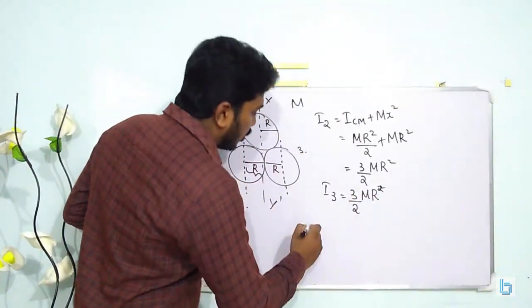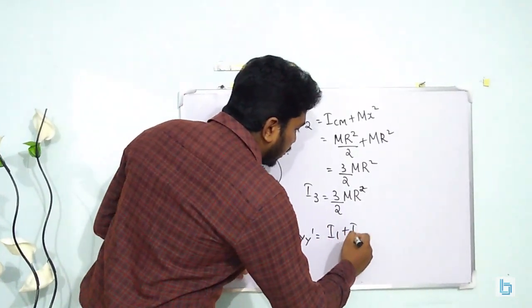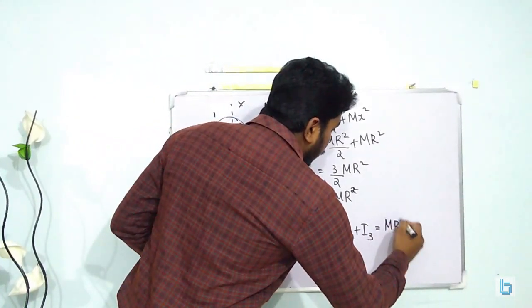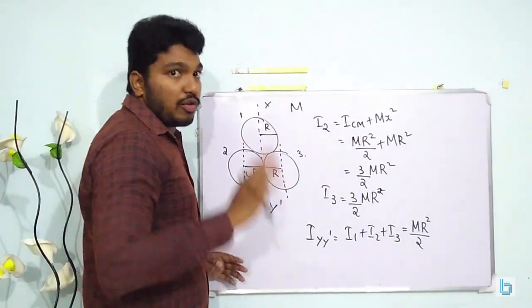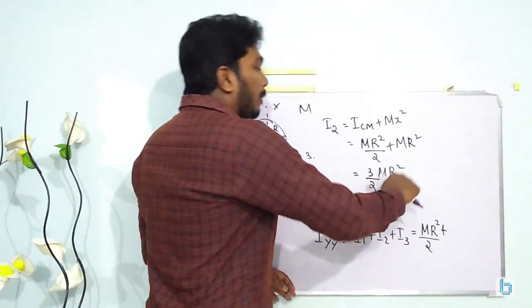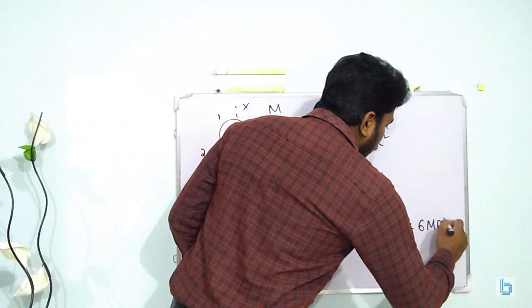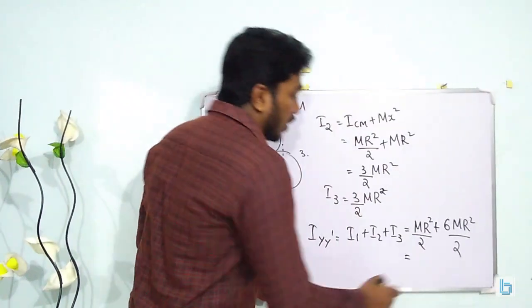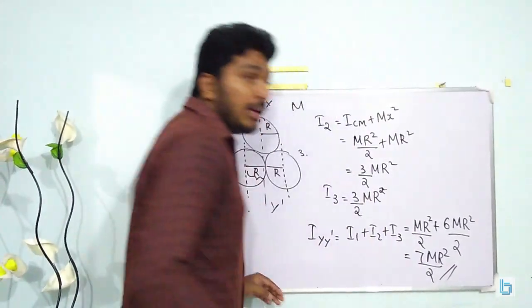So we can find out the total moment of inertia I about y y' will be equal to I_1 plus I_2 plus I_3, or that will be equal to, the first ring it is mr square by 2, here y y' is already passing through its center of mass, plus 3 by 2 mr square plus 3 by 2 mr square. Write it as 6 mr square by 2, or this is equal to 7 mr square by 2. So the answer is 7 mr square by 2.